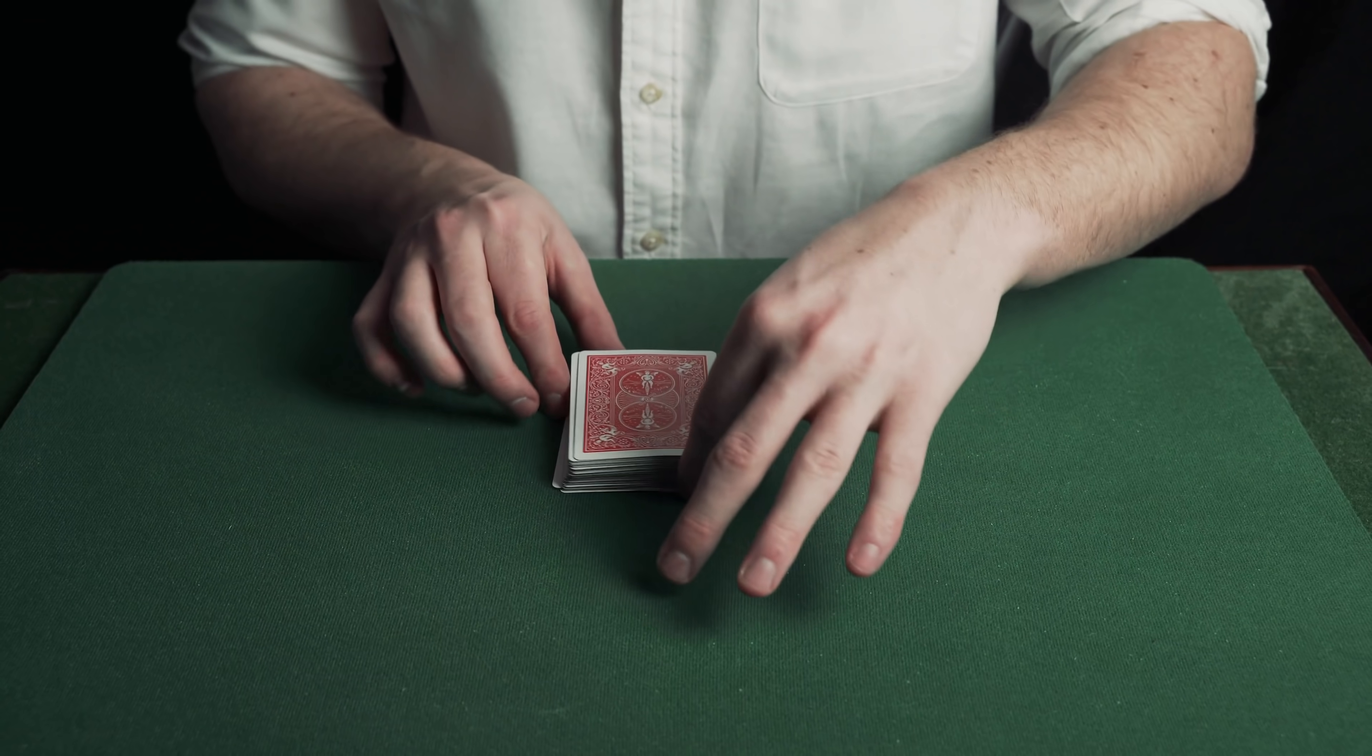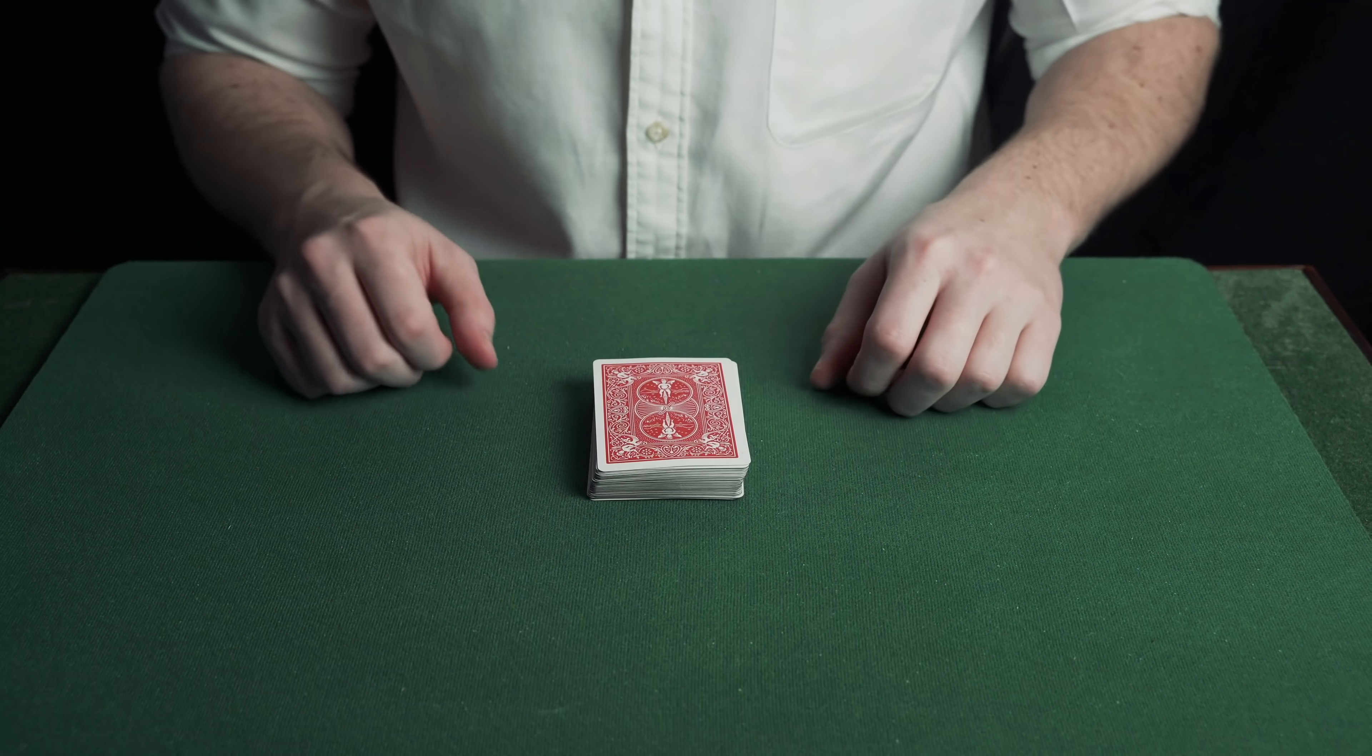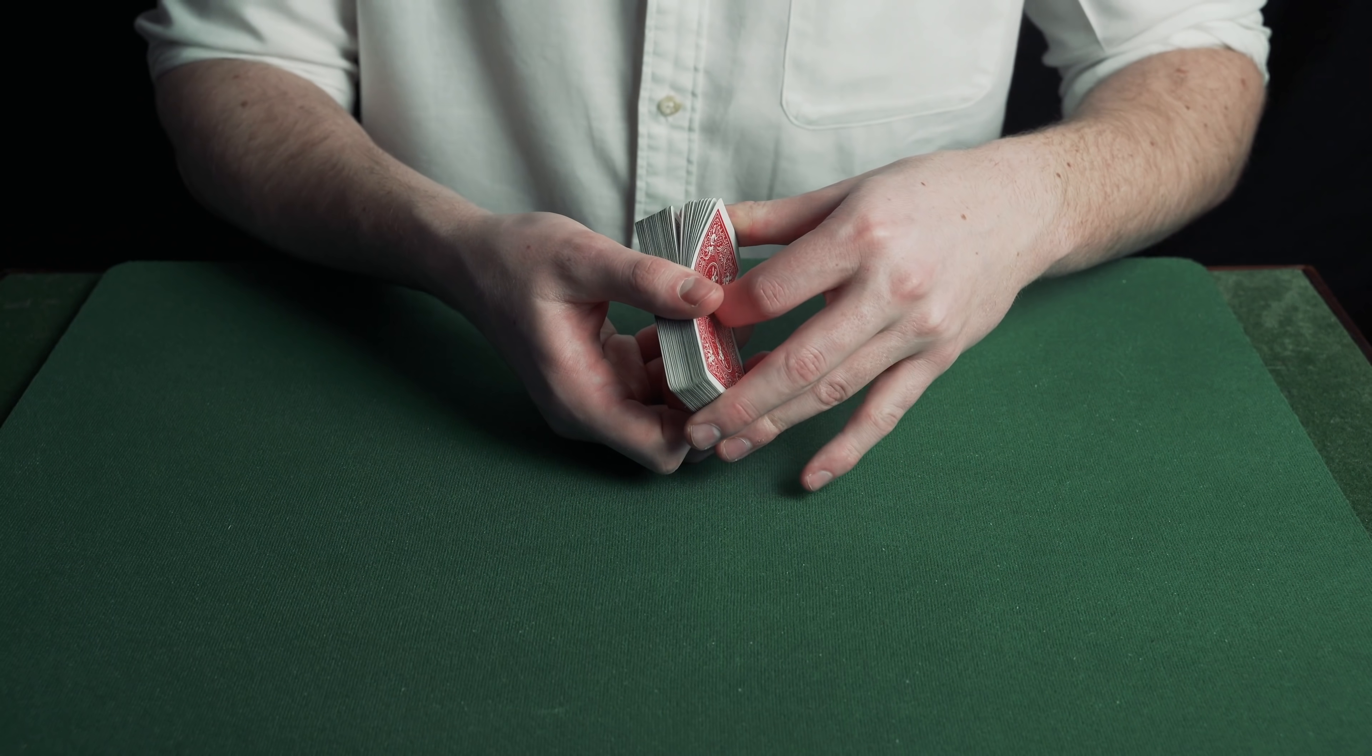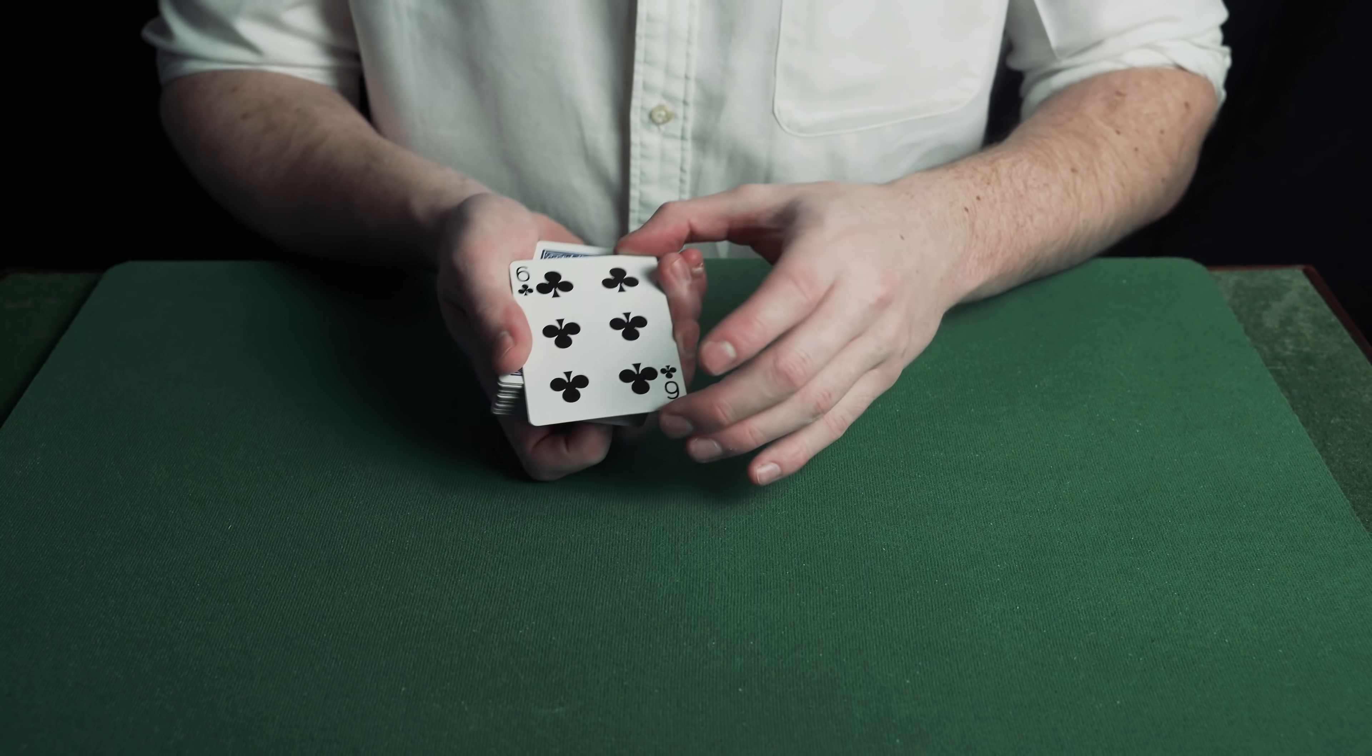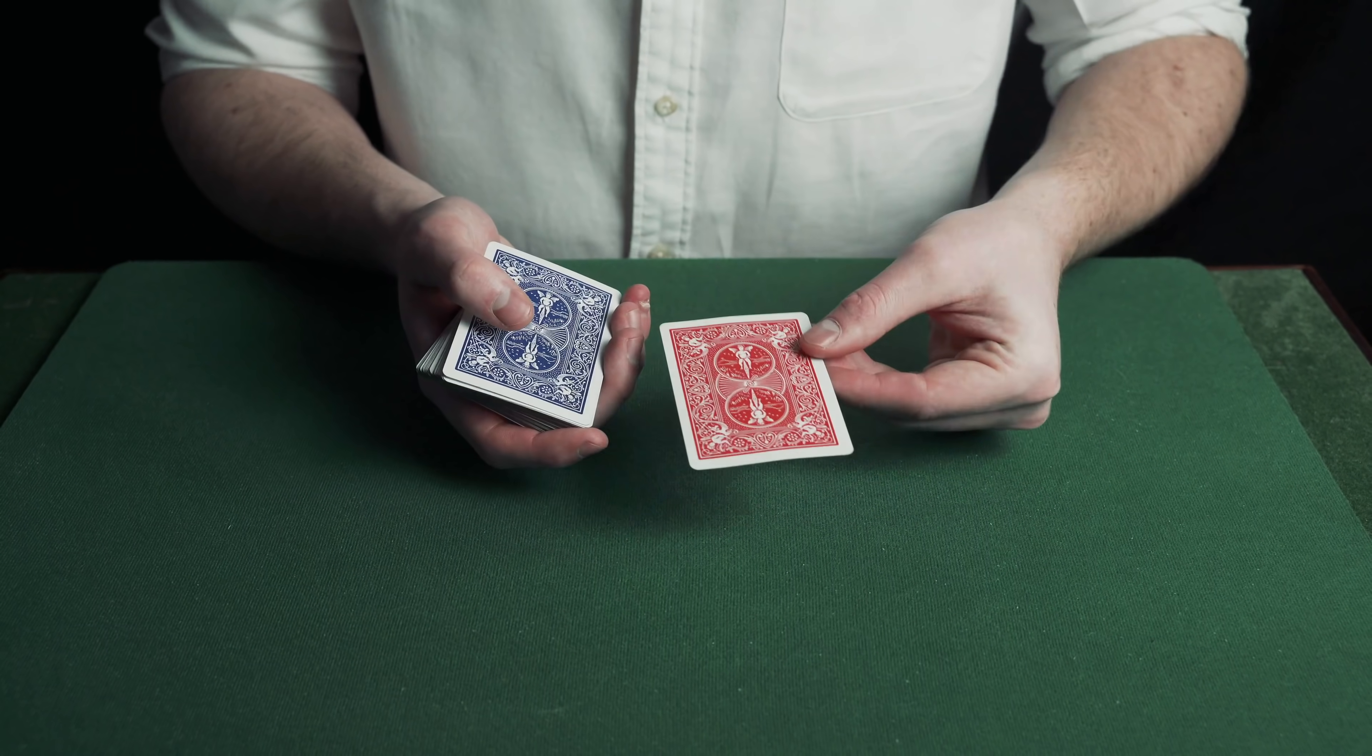You now have one ten of diamonds on the bottom and on the top of the deck. The second card from the top is the spectator's selection. Do a double lift and this will look as if the six of clubs is the only red card. Do this by riffling up the back of the deck with your thumb until you get a break under the top two cards, then just turn them both over as shown. Place what they think is the red six of clubs on the table when in reality it's the ten of diamonds.